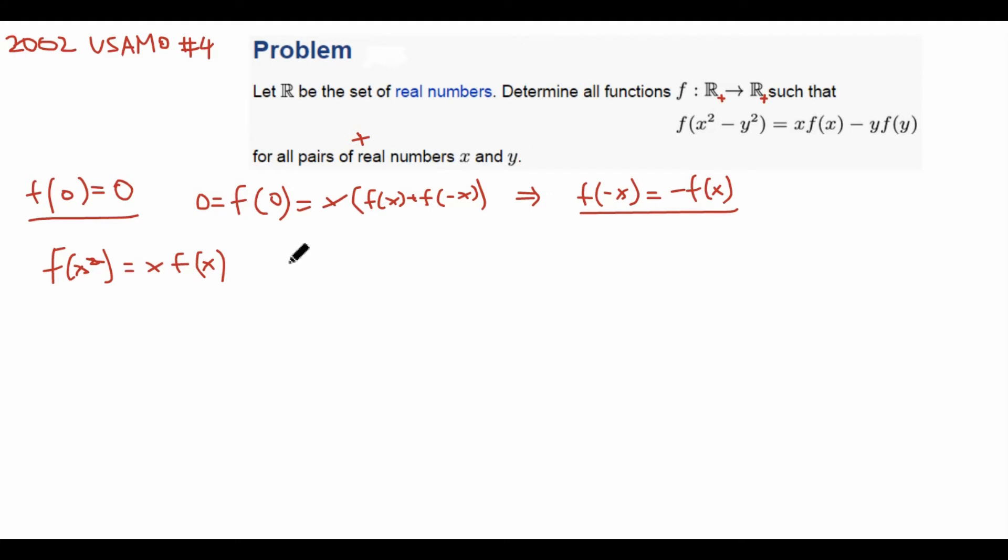we have a xf(x) here and an xf(x) here. We also have a yf(y), which is equal to f(y²). So now we can change this entire thing into f(x² - y²). Well, this just equals f(x²) - f(y²). And this is useful because it's a lot simpler than our original expression. In fact, if we substitute x² equals a and y² equals b, we can do this because we assume that x and y are both non-negative.